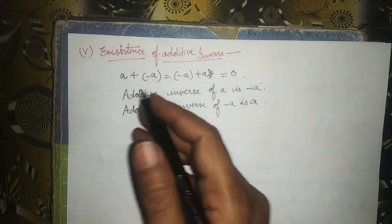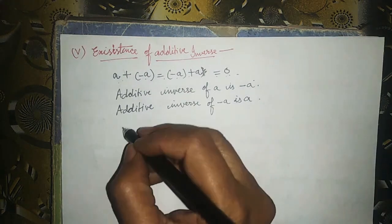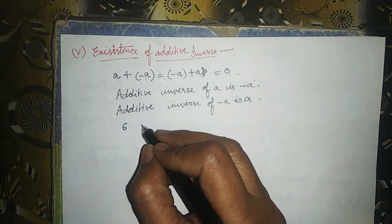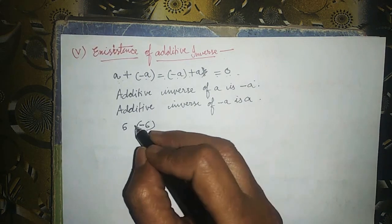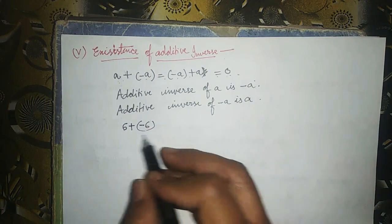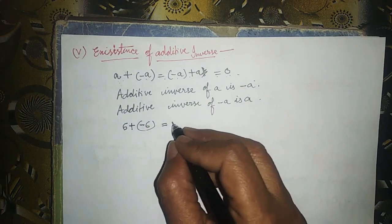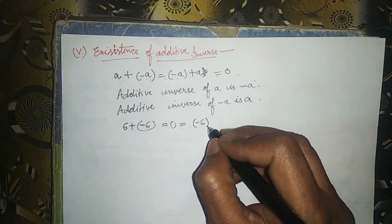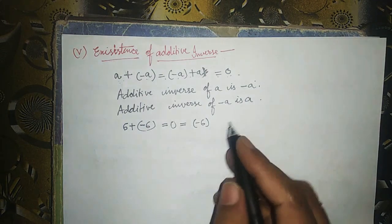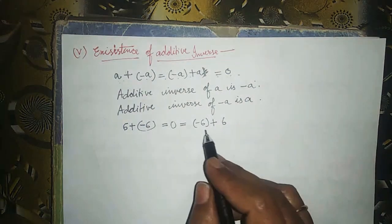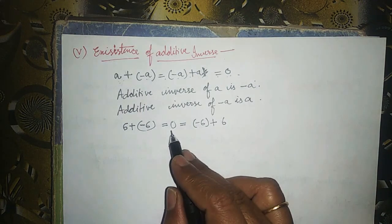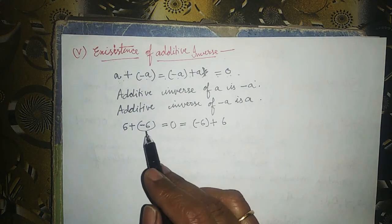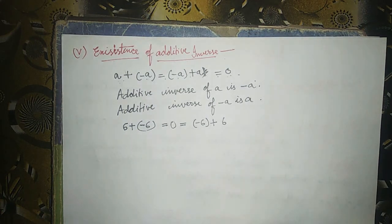We can see this with numbers: additive inverse of 6 is minus 6, and additive inverse of minus 6 is plus 6. Their sum is 0. So the sum of an integer and its additive inverse is always 0.